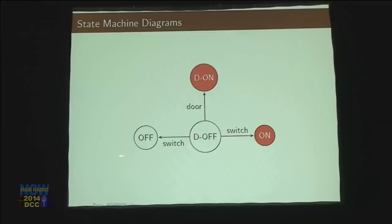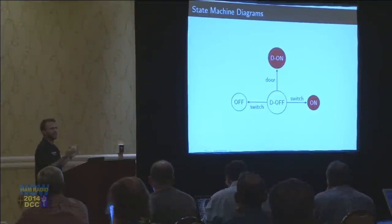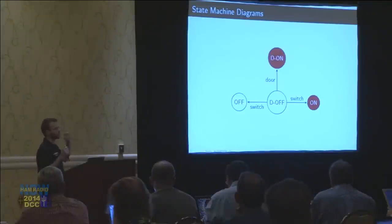There's a couple of different states — these are like the switch states. If the switch is off, the light's going to be off. If the switch is in the right position, it's in the on position and the light's always on no matter what. But if it's in the middle, then it depends: if the door's closed it's off, and if the door's open it turns on. That's a way to symbolize this concept and get it down on paper — how does the door switch work?